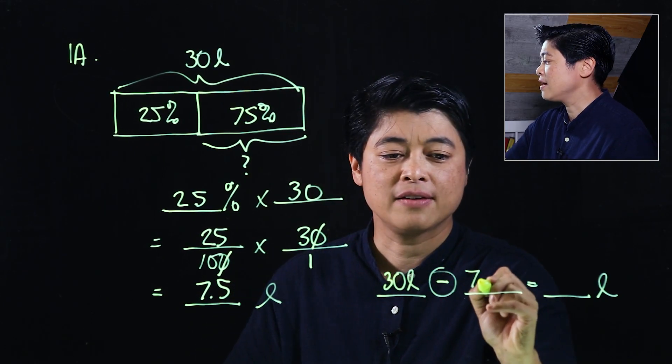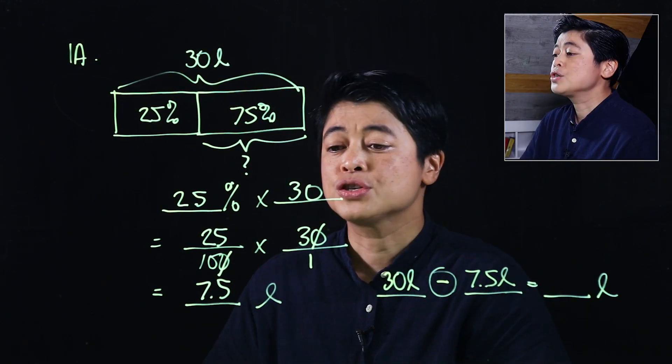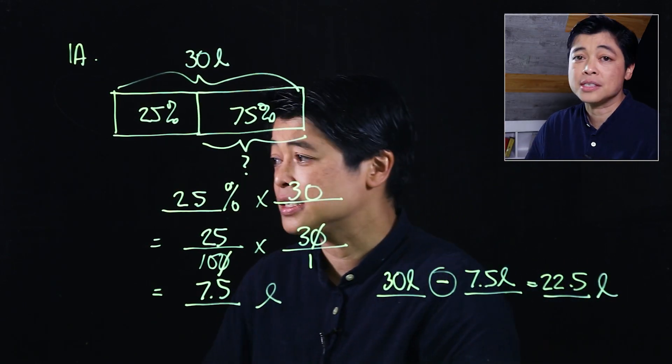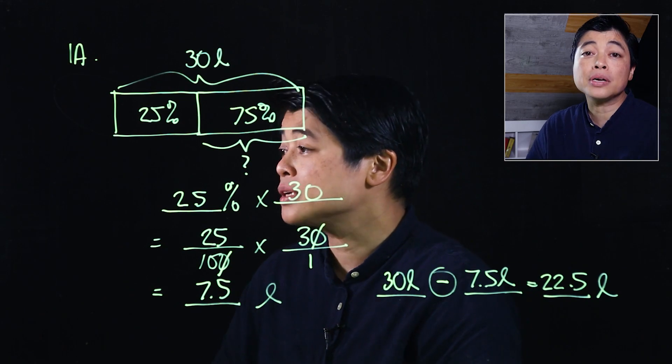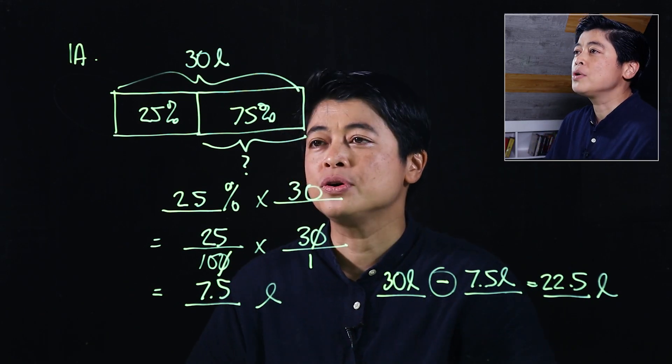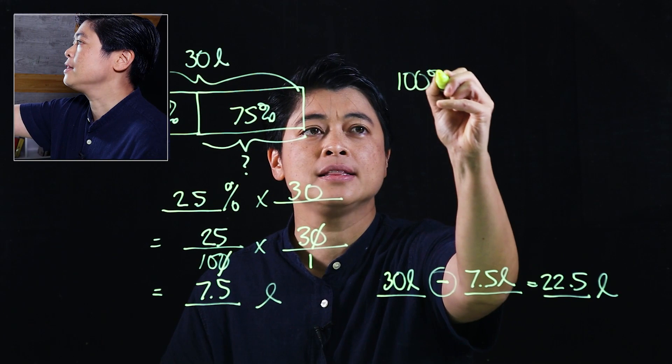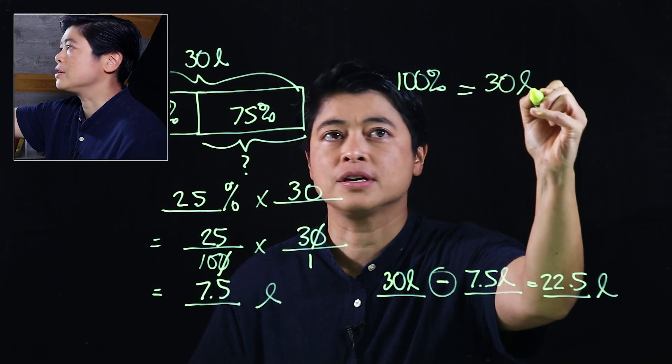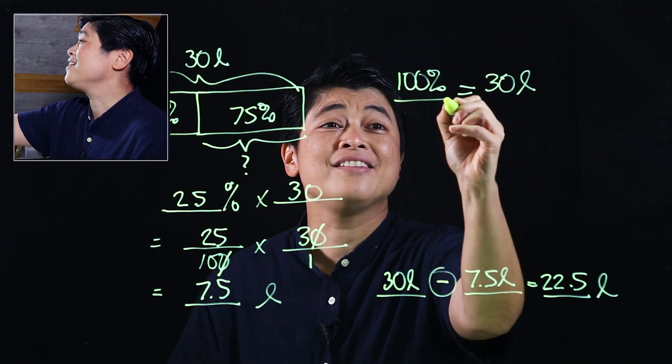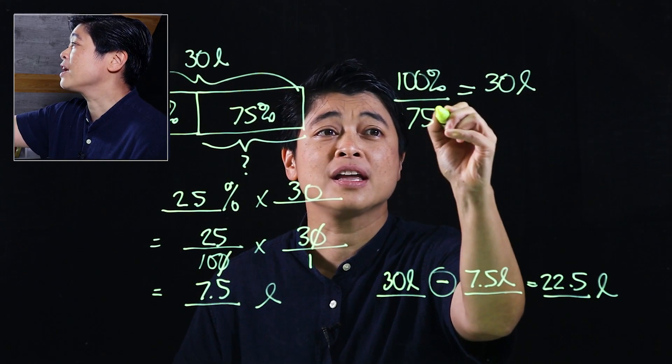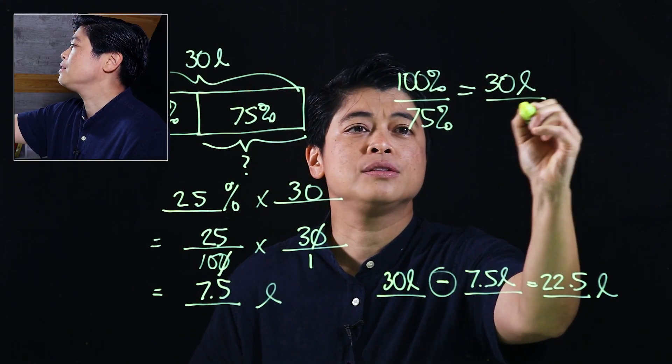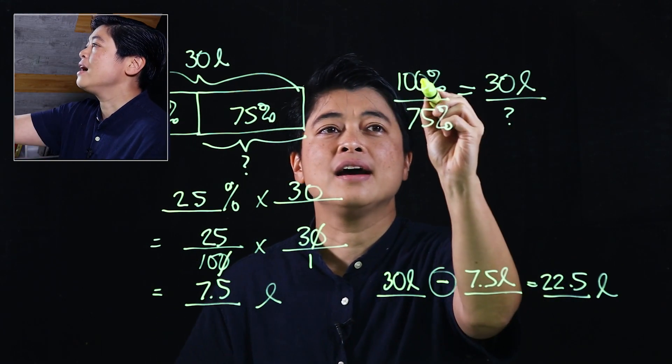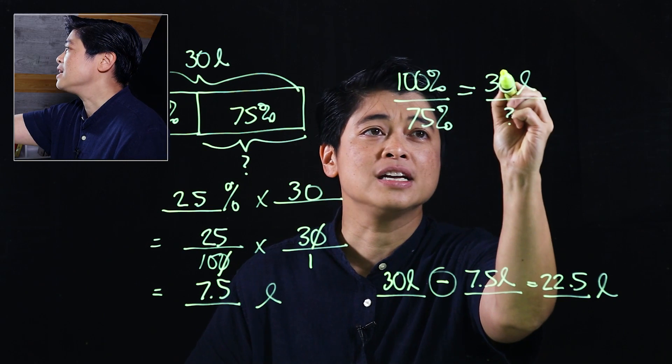My approach is: 100 is equal to 30 liters, 75 is what we're looking for, equals the question mark. I have a choice of either going this way.